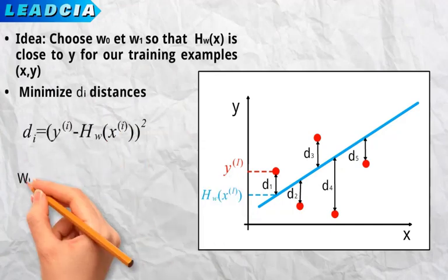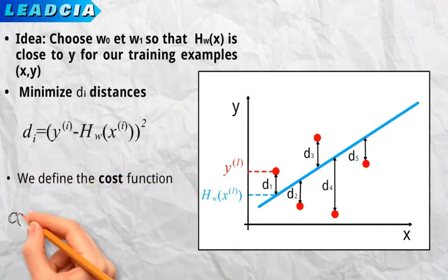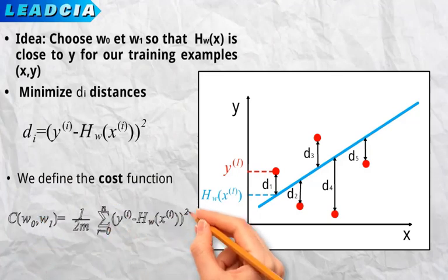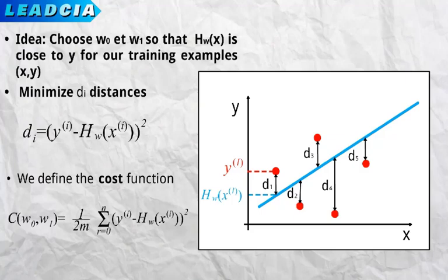If we want to minimize all these distances di, we will minimize their sum. This minimization will be done with respect to their average distance, which is the reason why we divide by m which is the number of examples in the training database. We also divide by 2 for simplifying some calculations that we will do in the following videos. This is how we define the cost function of variable w0 and w1.